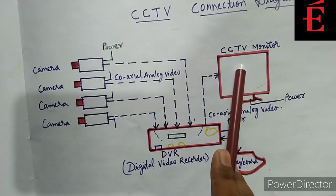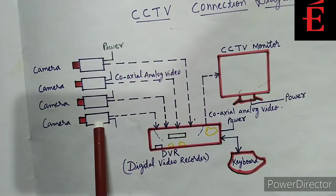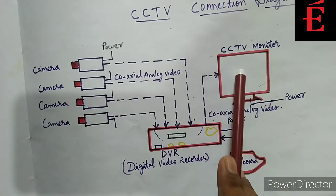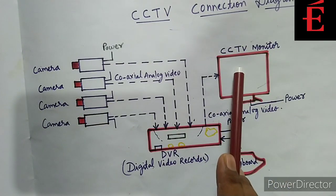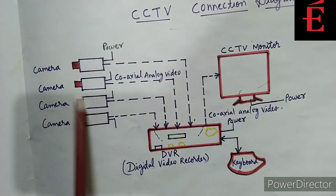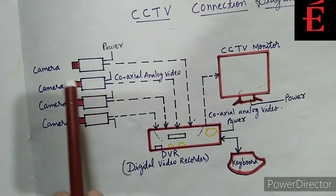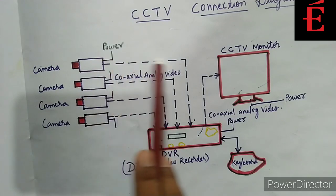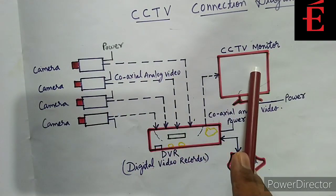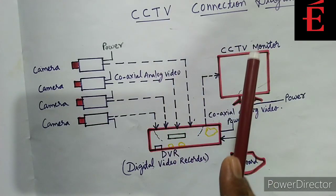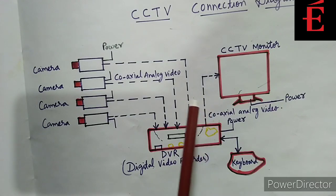Here you can see what the CCTV cameras are capturing — the images and videos — in this monitor. You can see the output. In this way, I have explained through the CCTV connection diagram how the camera captures images and how the data is transmitted from the camera to the DVR and from DVR to the monitor. I hope you have understood the CCTV connection diagram as well as how the connections are done in a CCTV system. Thanks.